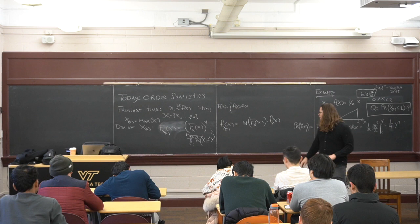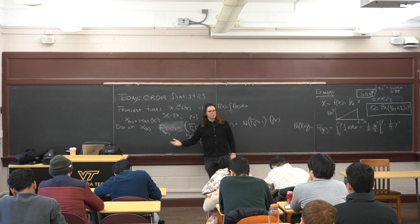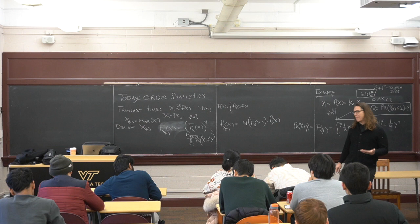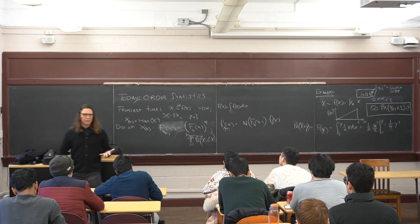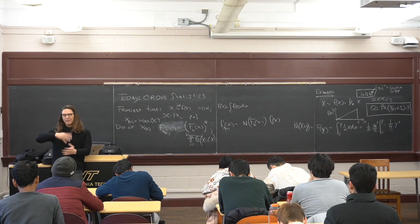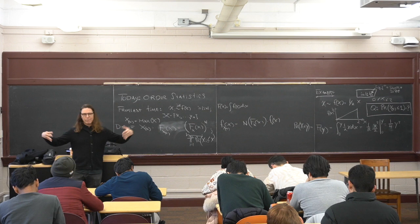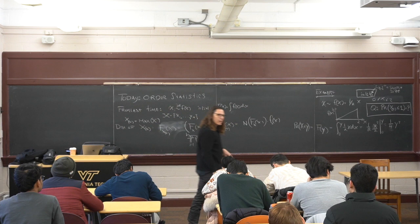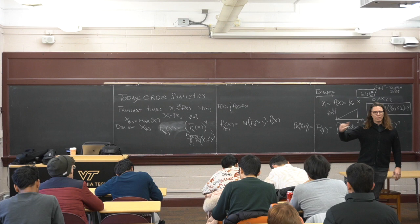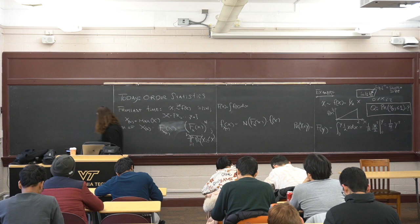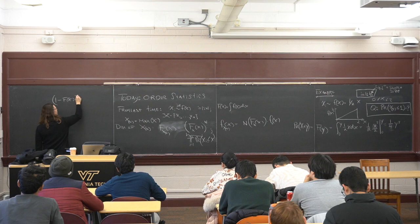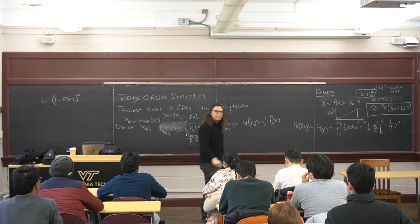A common question I'll ask on a midterm is: what's the probability that the minimum is less than x? It's an equally easy calculation if you remember to take complements — flip the sign so that all of the Xi's are bigger than something. That's the complement of the cumulative, producted up n times: one minus F(x) raised to the n. Then you complement again: one minus that thing. That's the cumulative probability of the minimum order statistic.